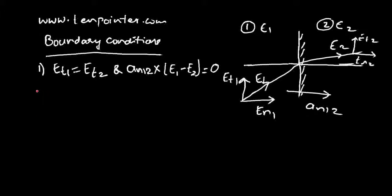The second boundary condition concerns the normal components of electric flux density, Dn1 and Dn2. These have a discontinuity of magnitude ρs across the interface.